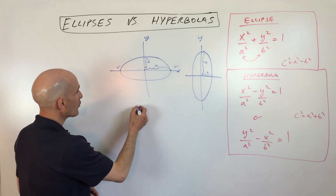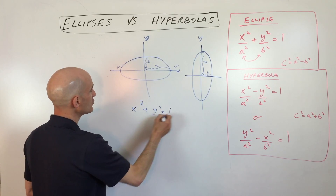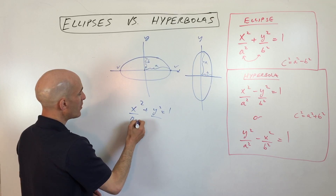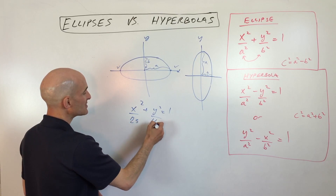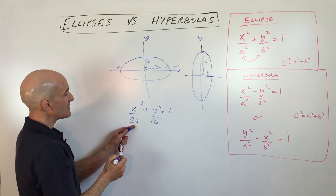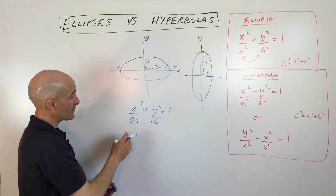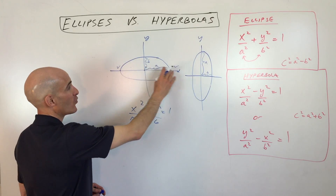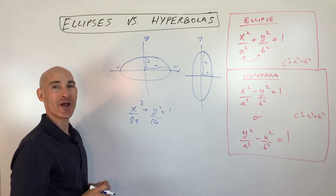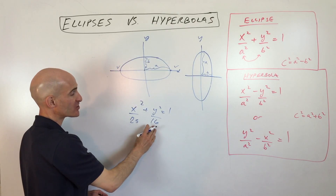I'll give you some examples of the equation. Say for example, this one could be x squared over 25 plus y squared over 16 equals one. So that means we're going five to the right and five to the left. The number underneath the x tells you you're going in the x direction — easy to remember.